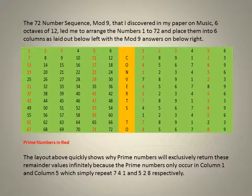The 72 number sequence mod 9 that I discovered in my paper on music, 6 octaves of 12, led me to arrange the numbers 1 to 72 and place them into 6 columns as laid out below left with the mod 9 answers on below right. The layout above quickly shows why prime numbers will exclusively return these remainder values infinitely because the prime numbers only occur in column 1 and column 5, which simply repeat 7, 4, 1 and 5, 2, 8 respectively.